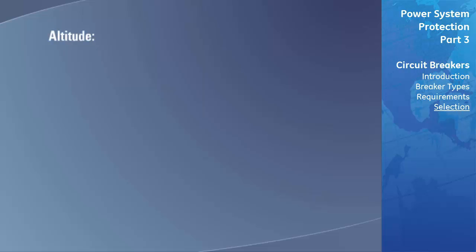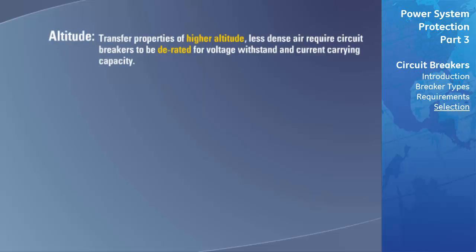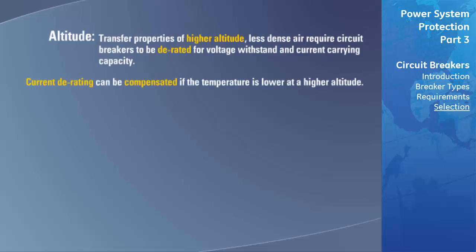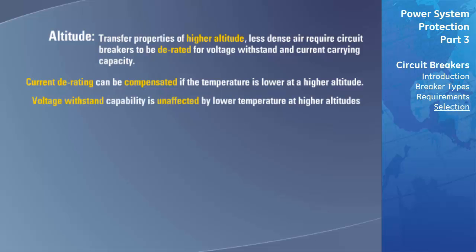As altitude increases, atmospheric pressure and air density decrease. The reduced insulation and heat transfer properties of less dense air require that circuit breakers be de-rated for voltage withstand and current-carrying capacity. Current de-rating can be compensated to some degree if the temperature at higher altitude is lower, but voltage withstand capability is essentially unaffected by lower temperatures at higher altitude.